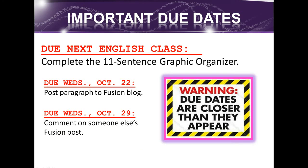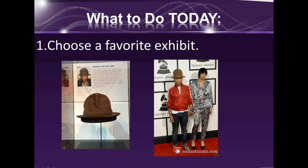You may be asking: I've never done an 11-sentence paragraph before — how do I do an 11-sentence graphic organizer? Let me walk you through it. First things first, choose your favorite exhibit. I decided to choose something temporarily on loan to the museum: Pharrell Williams' hat. So that's the exhibit I chose. You can choose anything in the museum that you like.